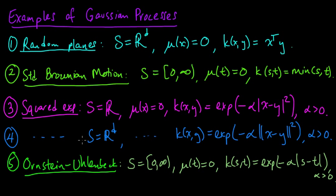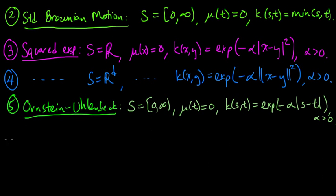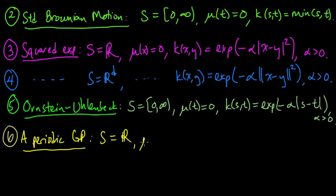That's Ornstein-Uhlenbeck. Now we get to some really fun examples. These are cool. These show you the very broad applicability and flexibility of this approach. Here's a periodic Gaussian process, not a periodic—it's a Gaussian process that is periodic. We're going to take S to be the real numbers, our mean function as before is zero everywhere.